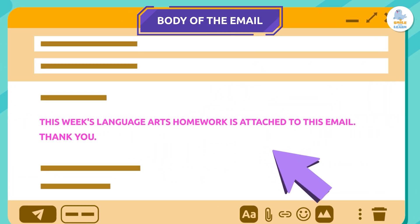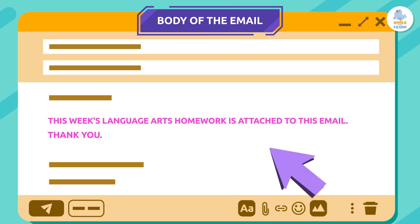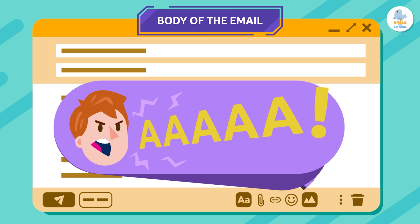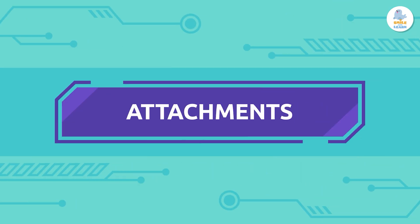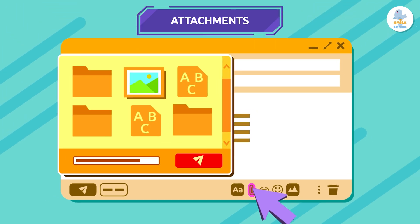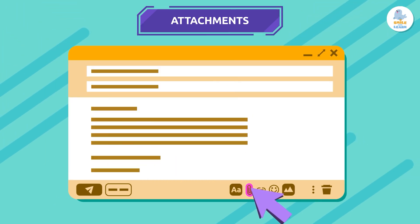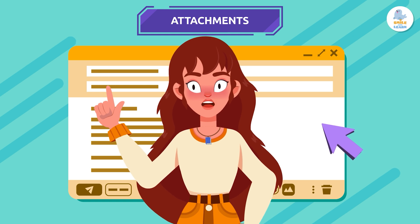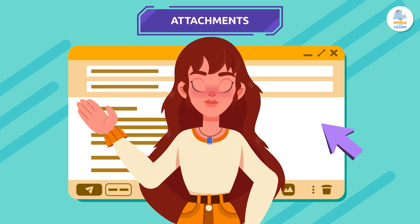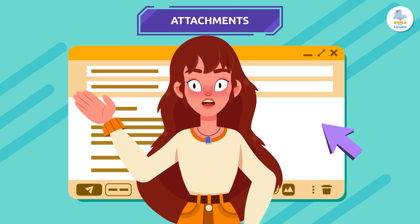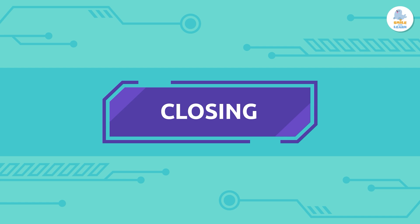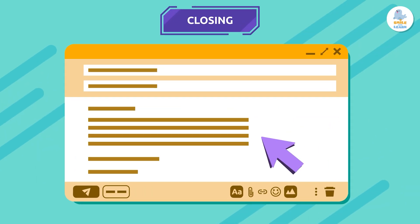Be careful — don't write everything in all capital letters, because in digital communication capital letters mean that you're shouting. Attachments: sometimes we want to send more than just text, like photos or documents. That's what attachments are for. Just click on the paper clip icon and choose the file you want to attach. Make sure you choose the right attachment — you won't believe how many times I've sent empty emails thinking they had an attachment!